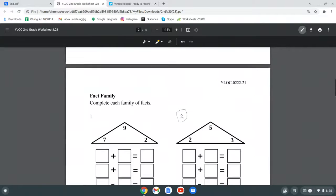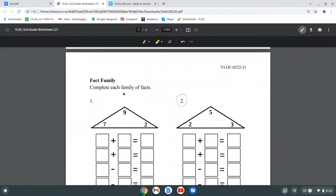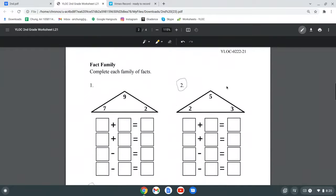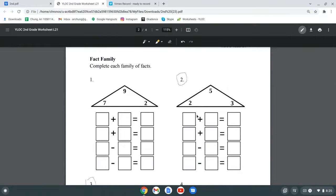Let's go to the next page and here we have fact family. Complete each family of facts. Let's see number 2. We have something plus something equals this, and then something plus something equals this, and then something minus something equals something. So we have 2, 5, and 3. First, we know that 5 is greater than 2 and 3.